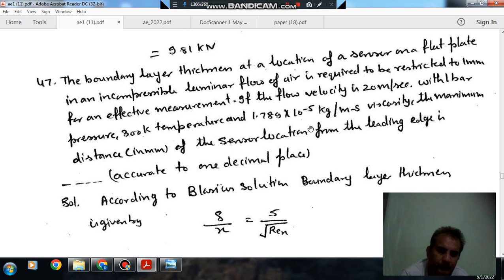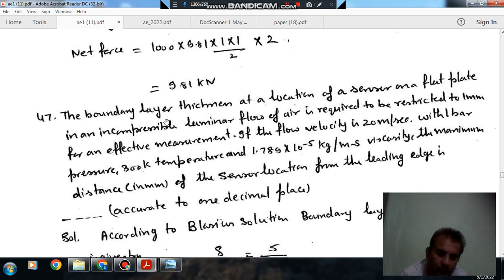Hello, welcome again. We are solving GATE 2018 aerospace engineering paper. We are solving only the questions from mechanical engineering. Question 47: The boundary layer thickness at a location of a sensor on flat plate in an incompressible laminar flow for air is required to be restricted to 1mm for an effective measurement.